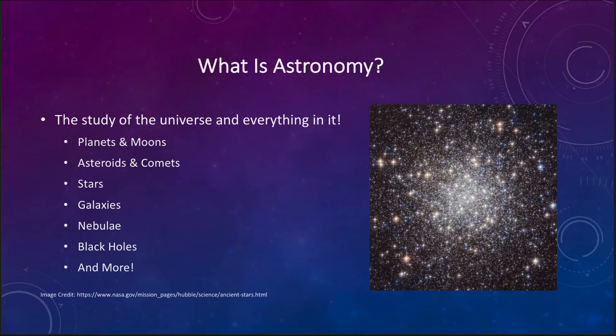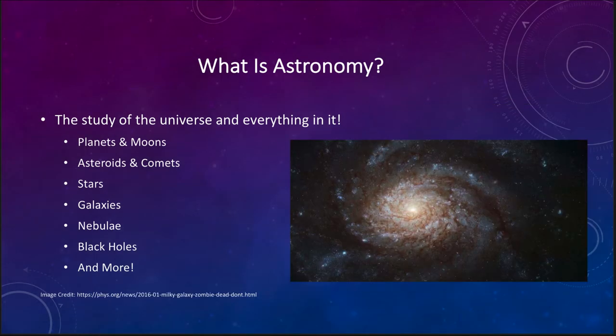That leads us to our next slide that shows us a galaxy here and this is an example of a spiral galaxy. Galaxies come in different types and spirals are one example.